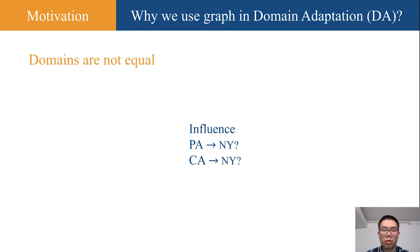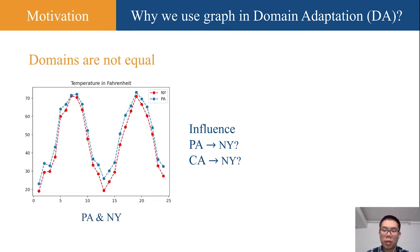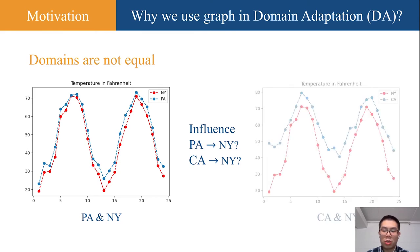And the real data supports this intuition. The first picture shows the temperature data of Pennsylvania and New York, and the second shows the data of California and New York. We can see that the data patterns in the first picture are much closer than in the second picture.